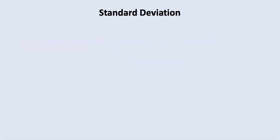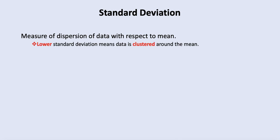So what is standard deviation? It is a measure of dispersion of data with respect to the mean. If there is a lower standard deviation, that means the data is more concentrated around the mean. And if there is a higher standard deviation value, that means our data is more spread out around the mean.